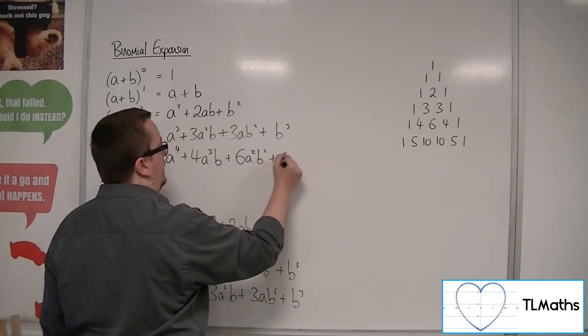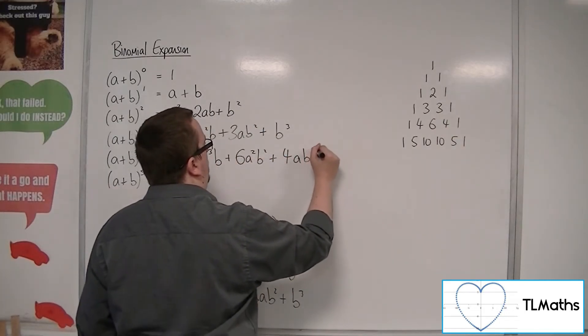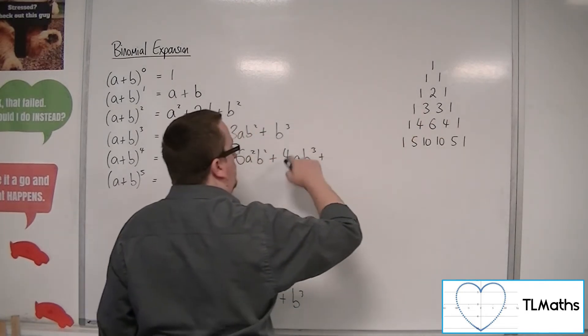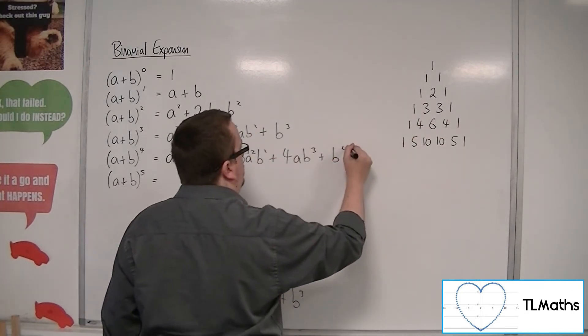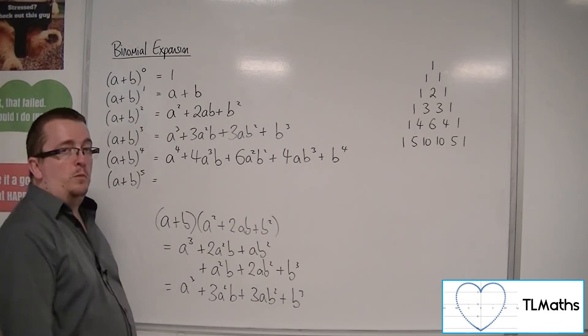The next coefficient is 6. A will reduce. B will increase. Then we'll have 4. A will reduce. B will increase. And finally 1. A will reduce. B will increase. And so here is what A plus B to the 4 must look like.